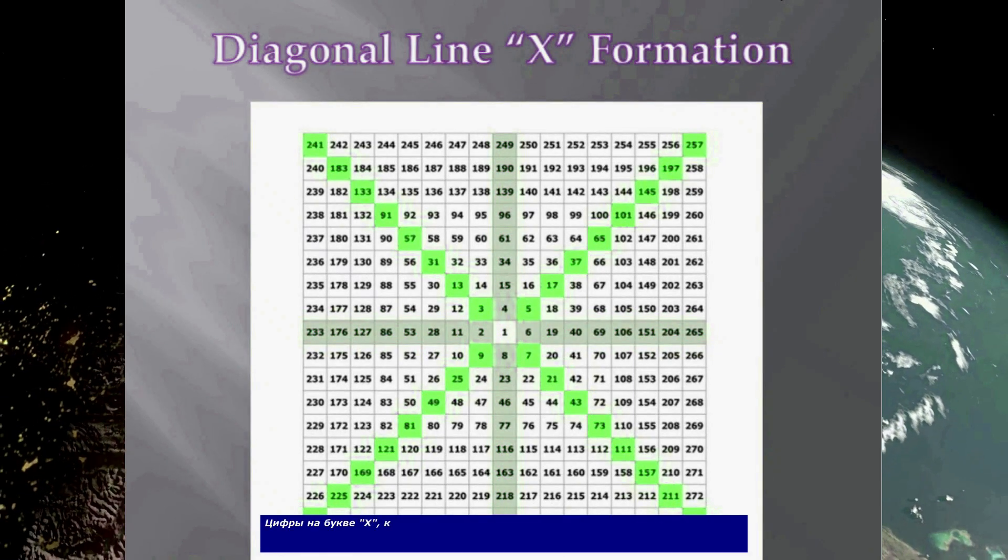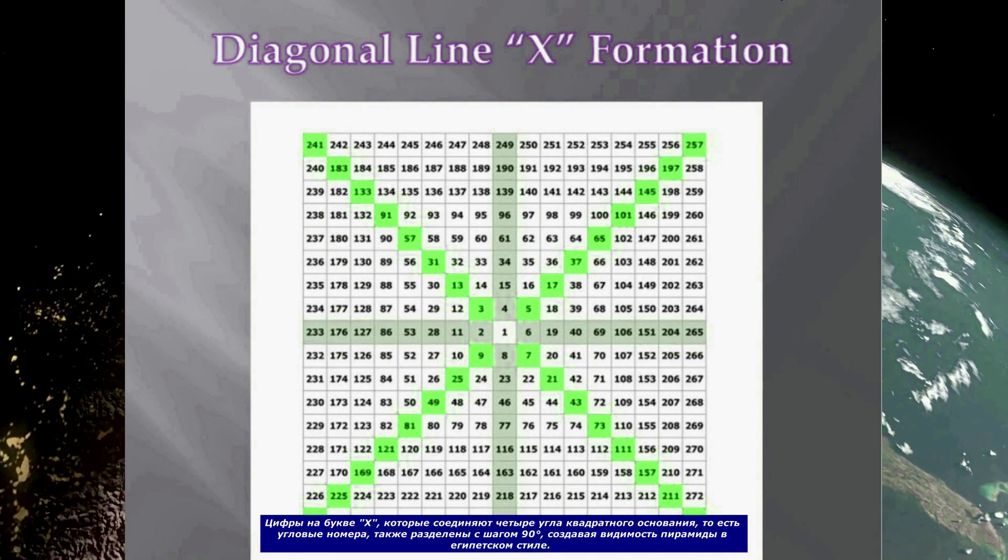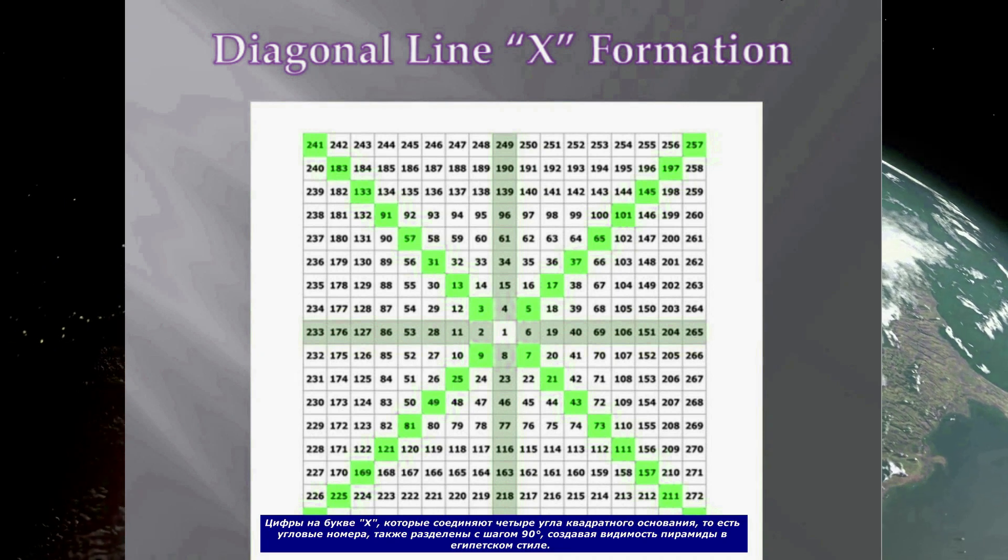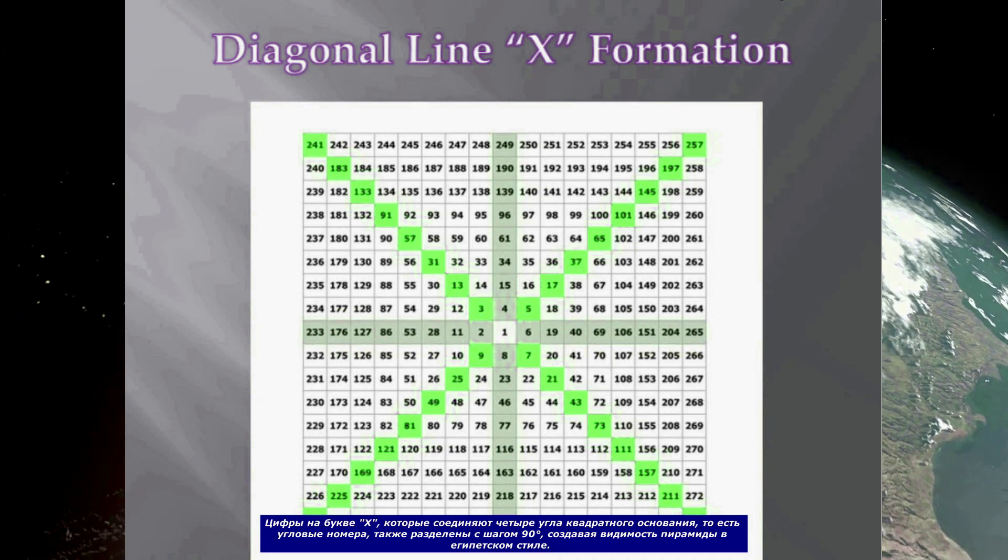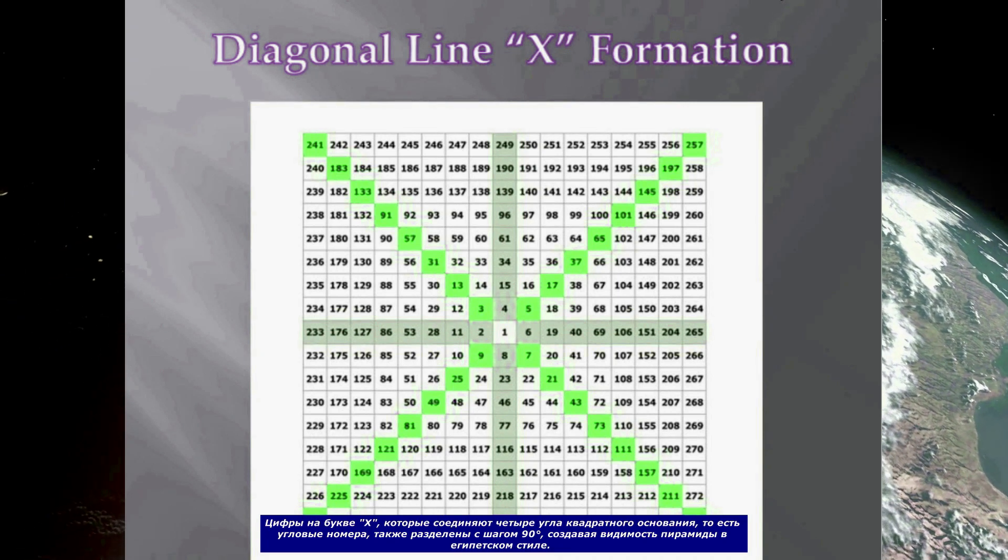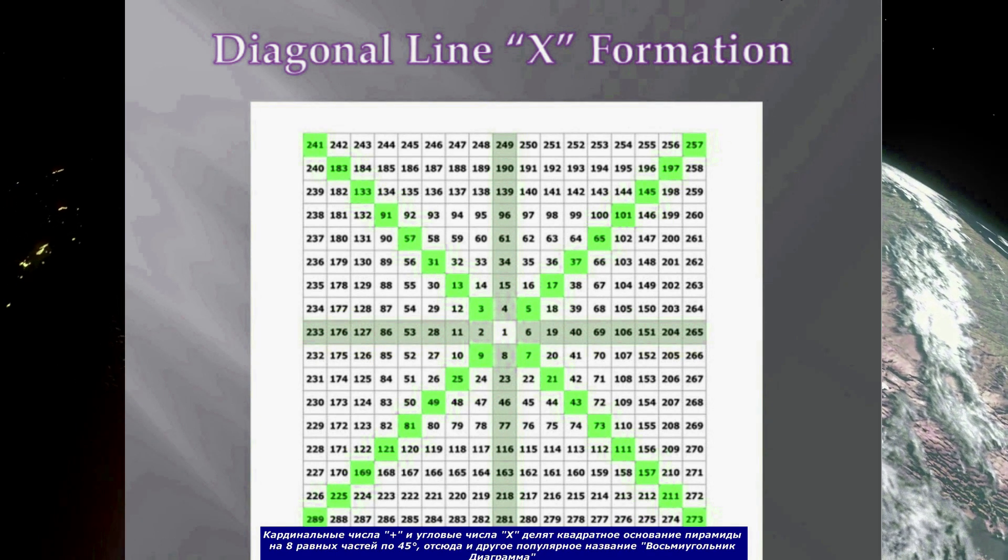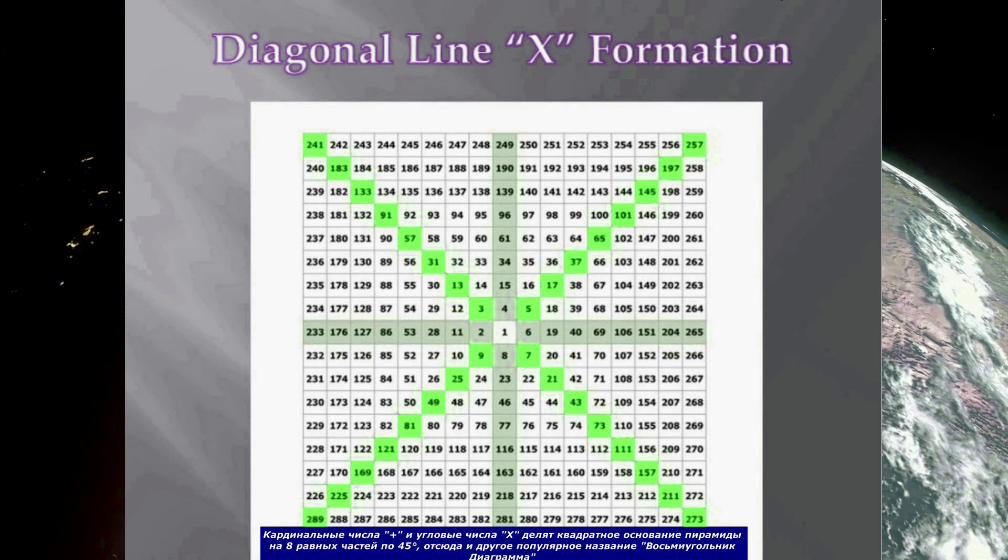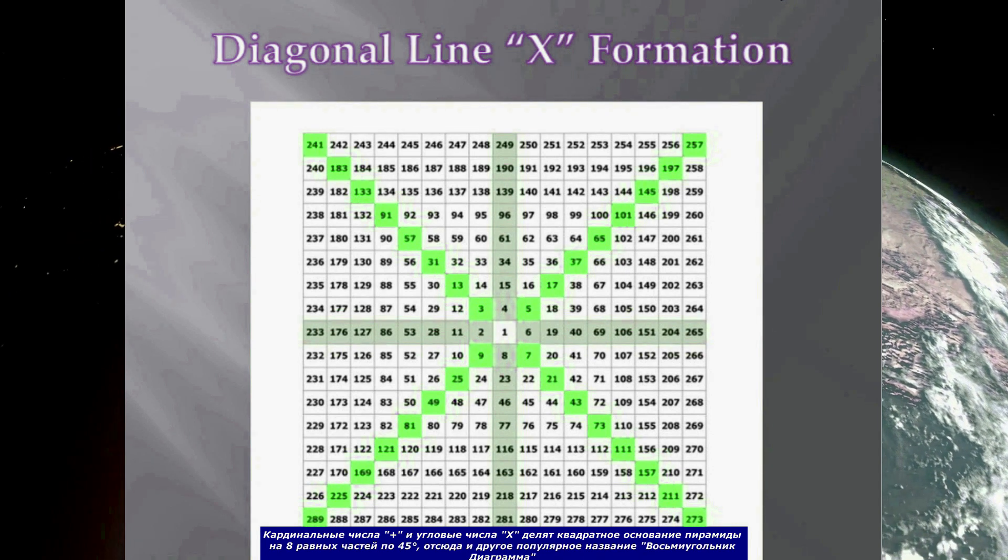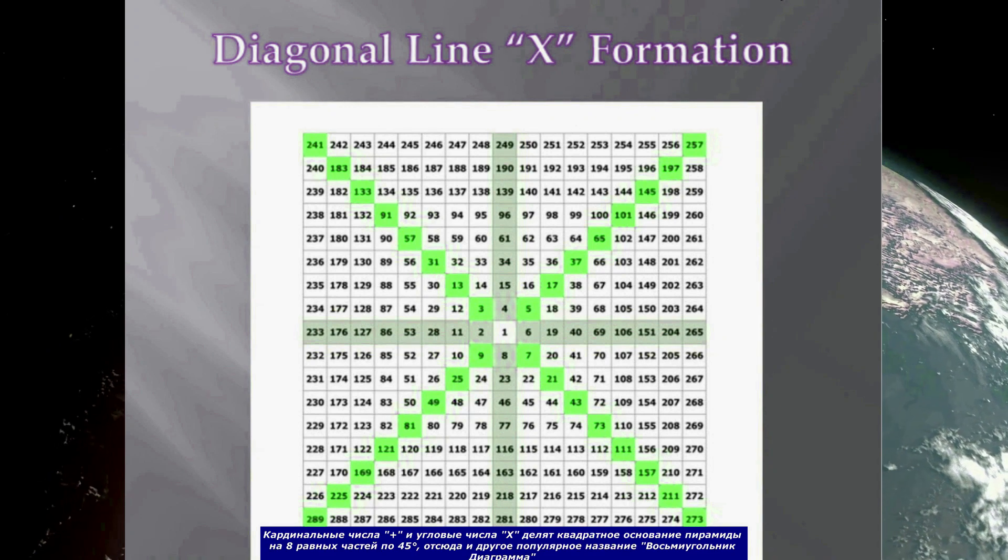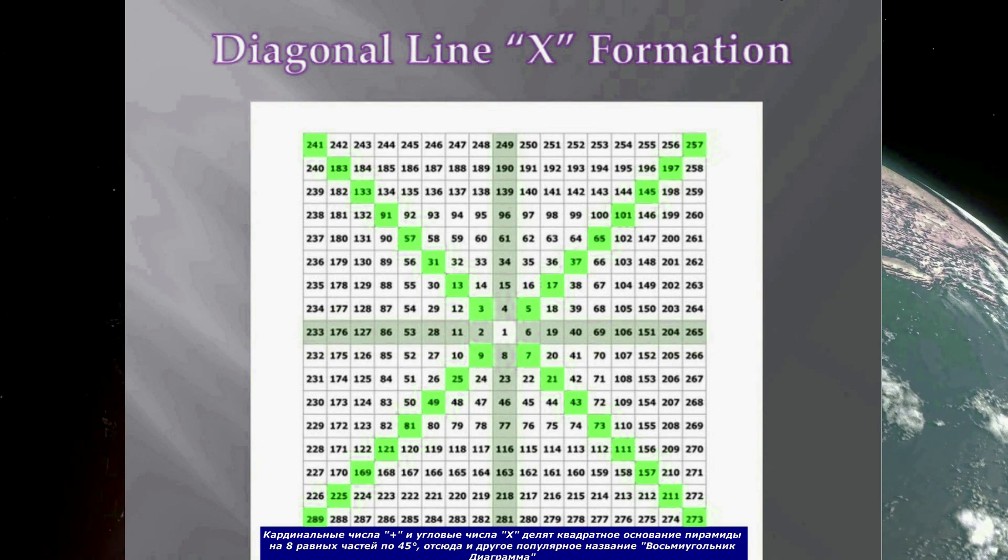The numbers on the X, which connect the four corners of the square base, the corner numbers, also are separated by increments of 90 degrees, giving the appearance of an Egyptian-style pyramid. The cardinal plus and corner X numbers divide the square base of the pyramid into eight equal divisions of 45 degrees, hence its other popular name the octagon chart.